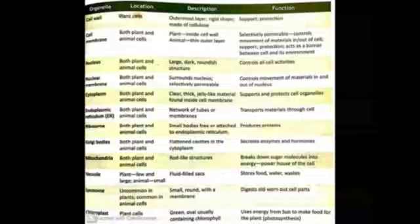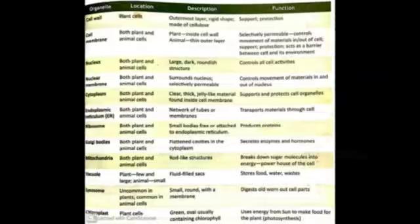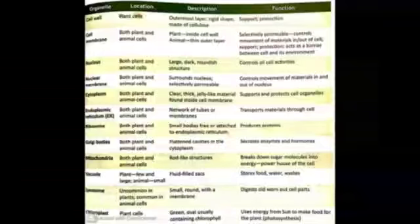If you go through this table, you will notice that there are a few parts present only in plant cells and a few present only in animal cells. The cell wall and plastids are present only in plant cells, while lysosomes and centrioles are present only in animal cells.